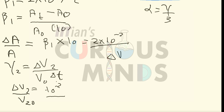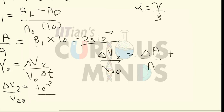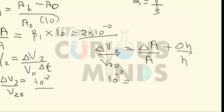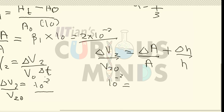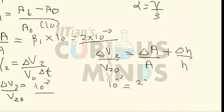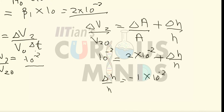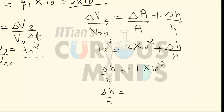Using the relation ΔV₂/V₀ = ΔA/A + ΔH/H, we get 10⁻² = 2×10⁻² + ΔH/H. Since the area has increased by 2×10⁻² and the volume increased by only 10⁻², the height must decrease. So ΔH/H = 10⁻² − 2×10⁻² = −10⁻², meaning the height decreases by 1%.